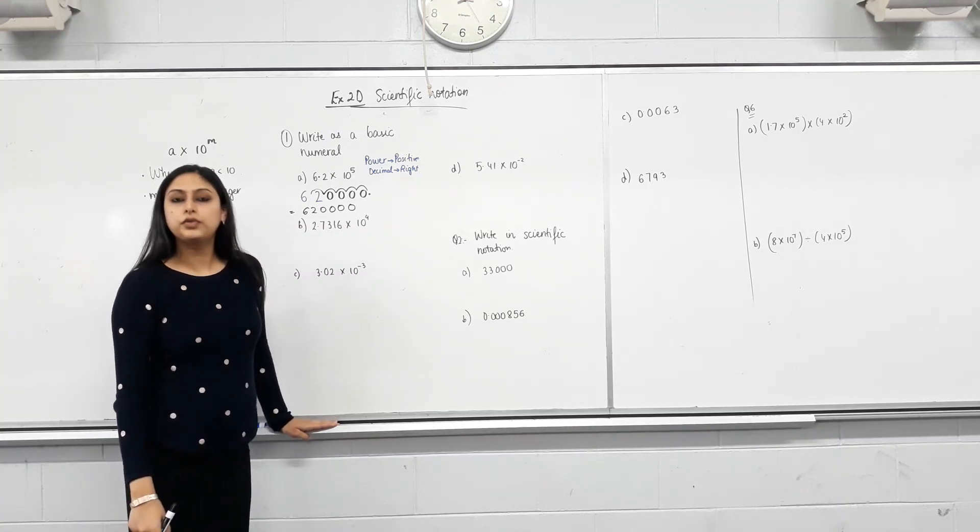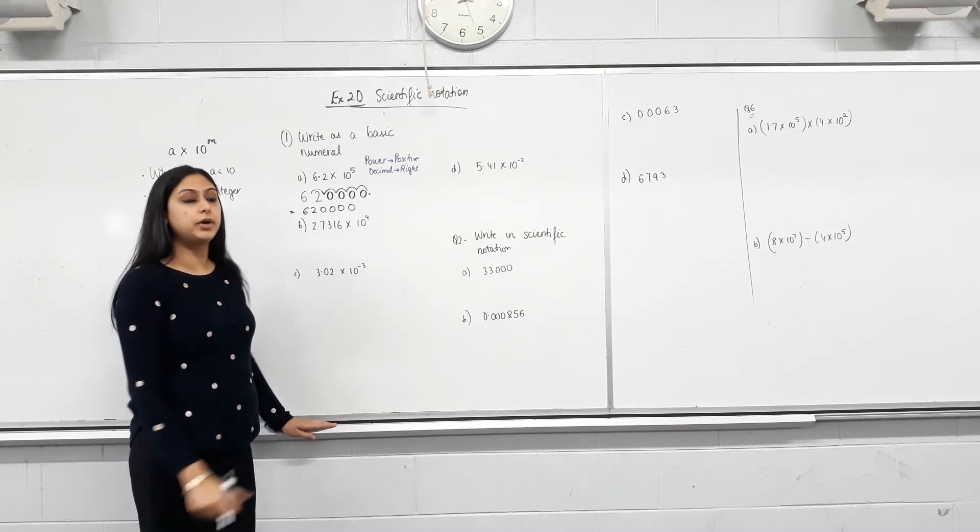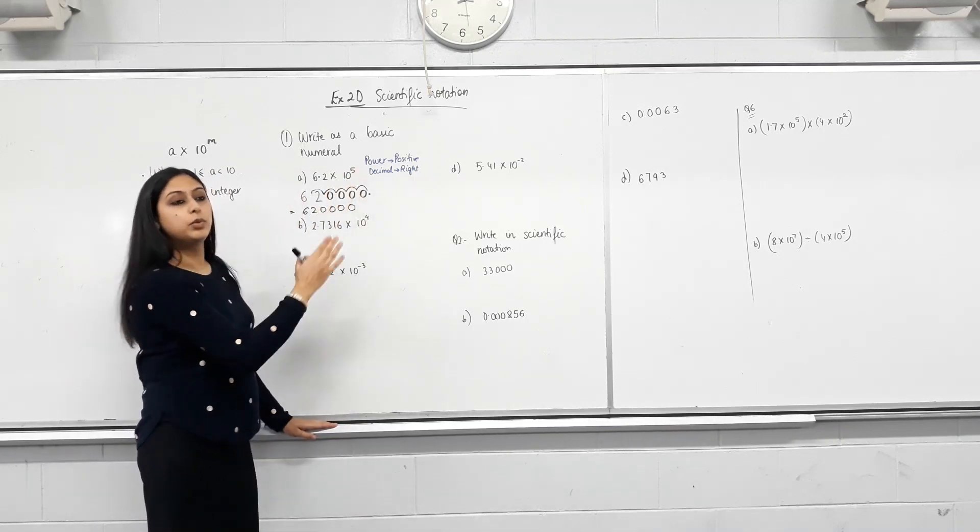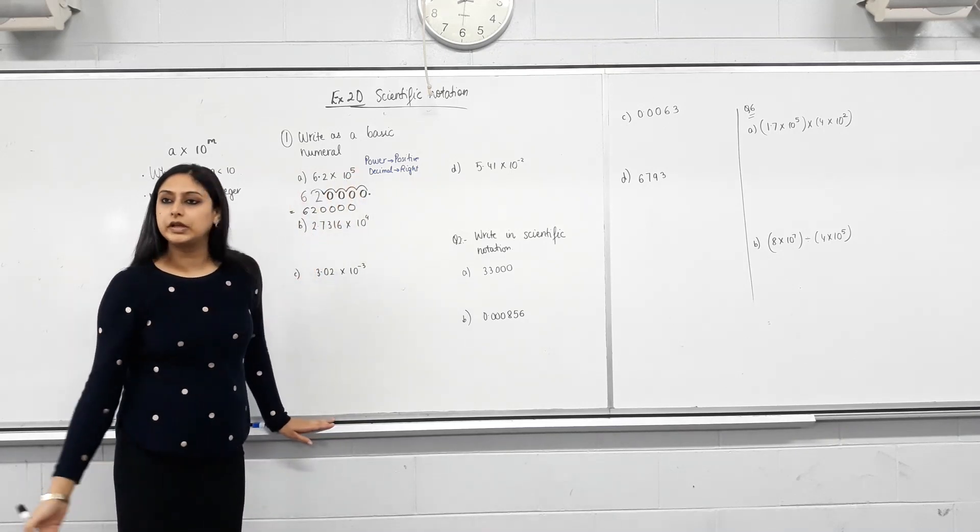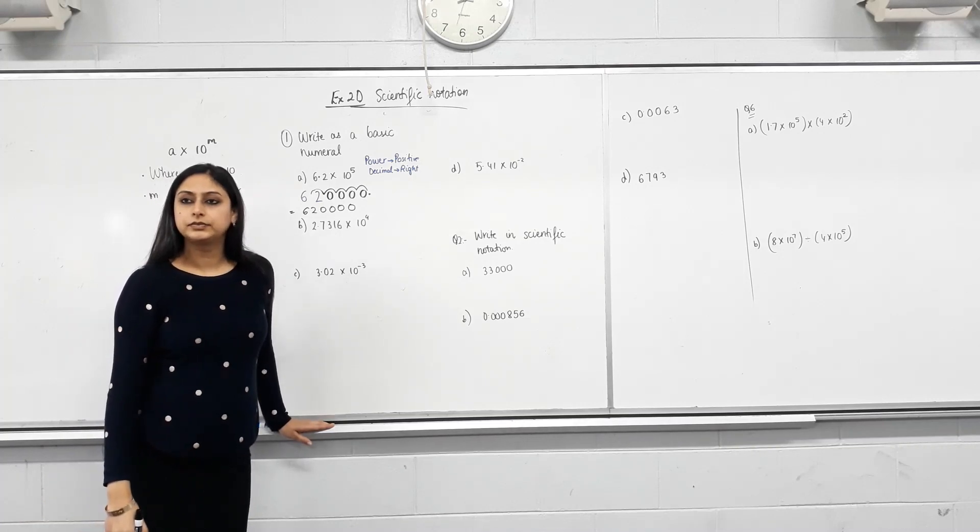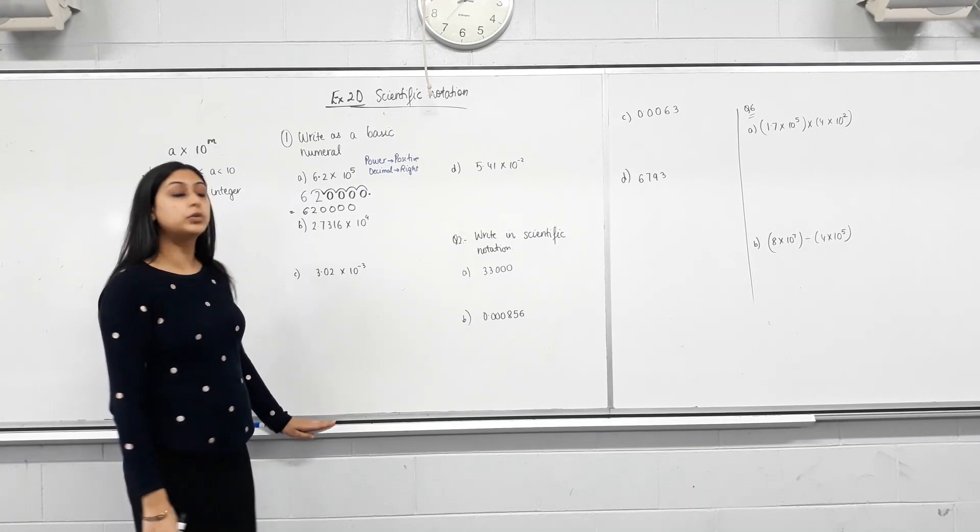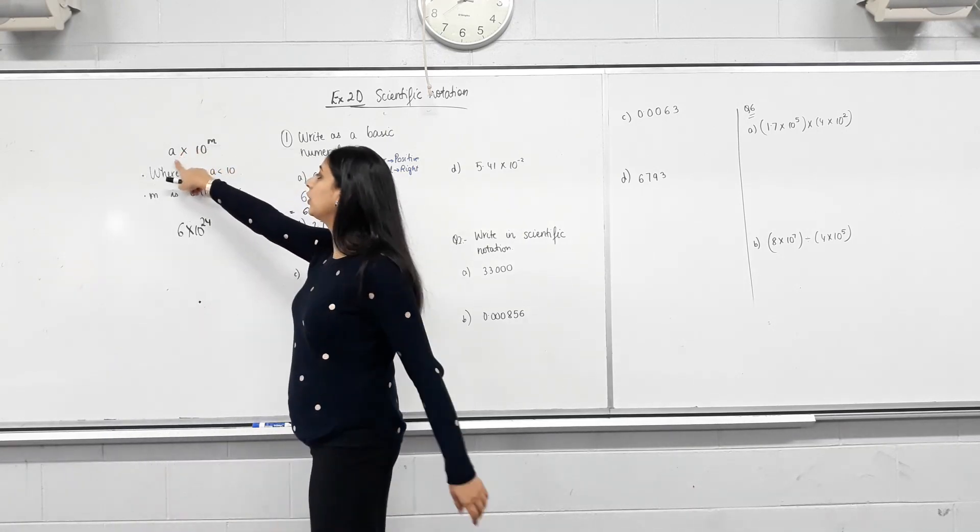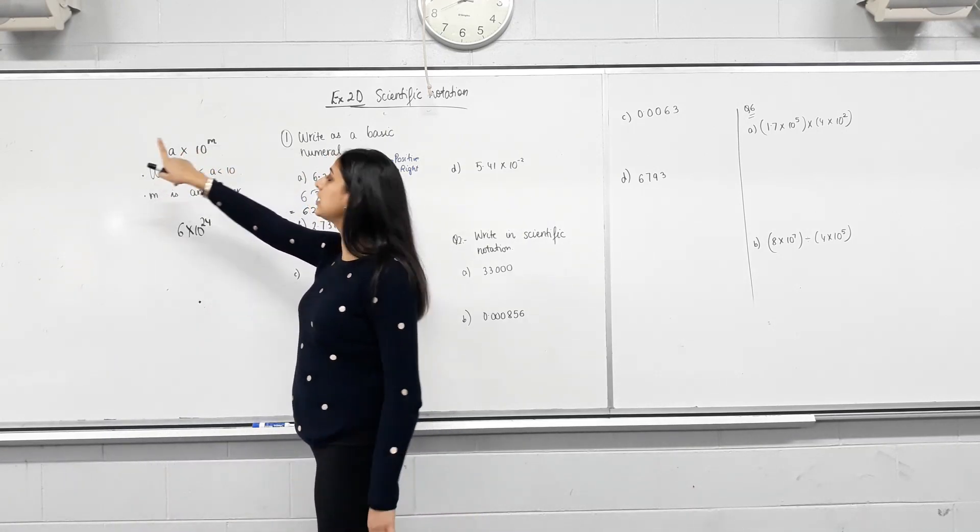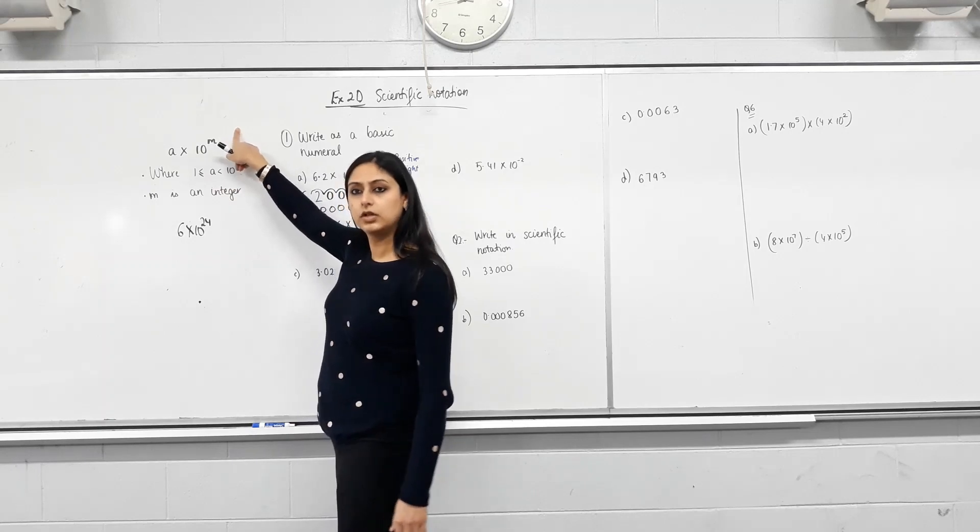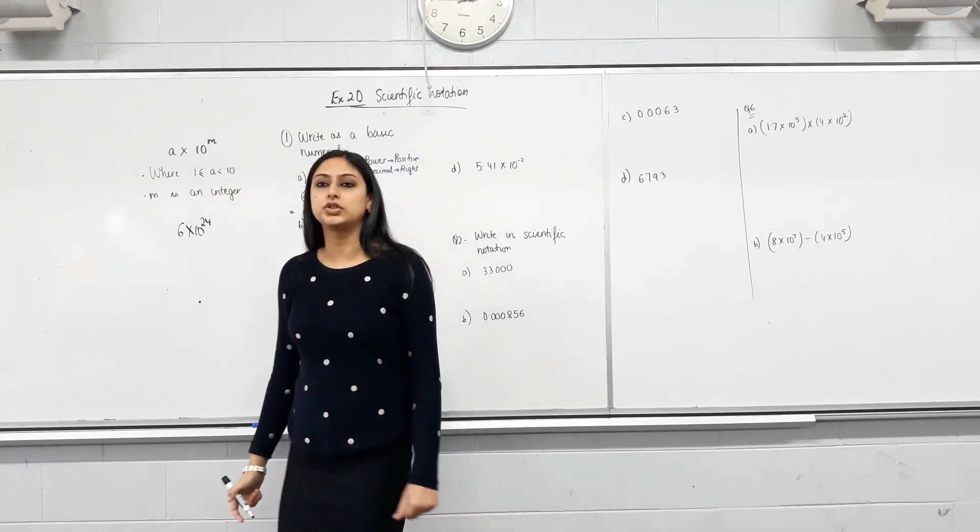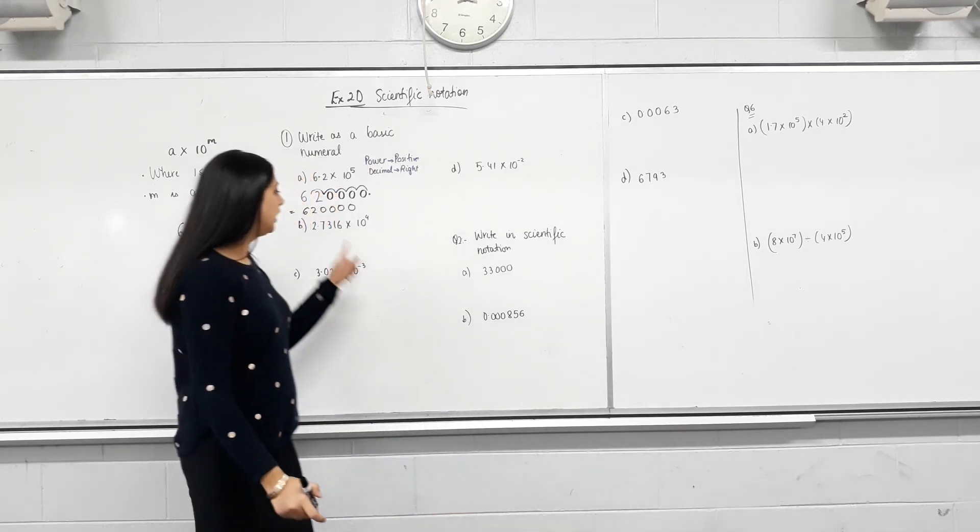So 6.2 times 10 to the power of 5 is actually equal to 620,000. So to convert from scientific notation to a basic number, if the power is positive, move the decimal that many places to the right. What would you do if the number is not 10? Yeah, it will be. That's what scientific notation is. A, that is something between 1 and 10 to the 10th power of something. So that is scientific notation. It will be to the power of 10. Are we happy with that?